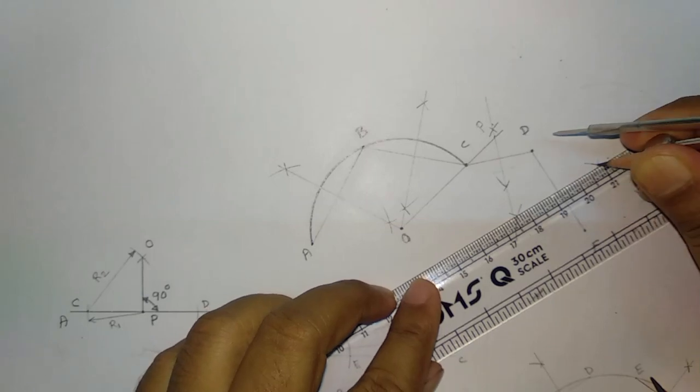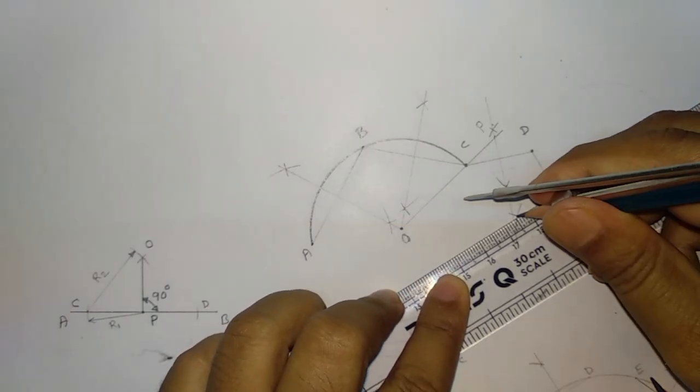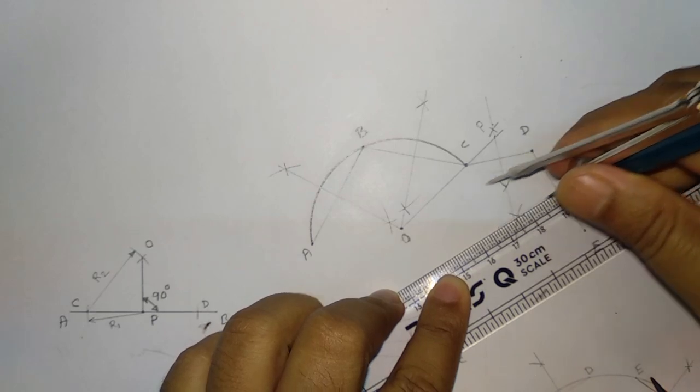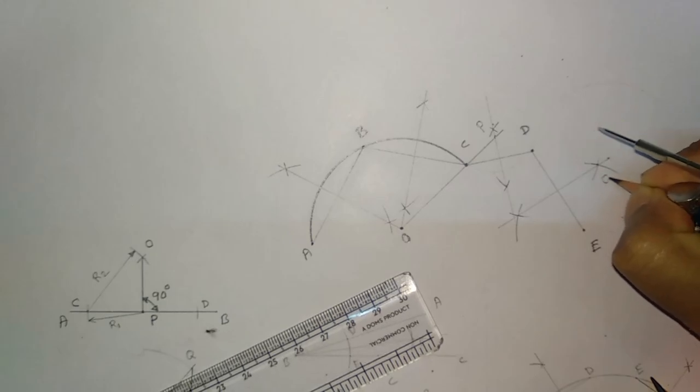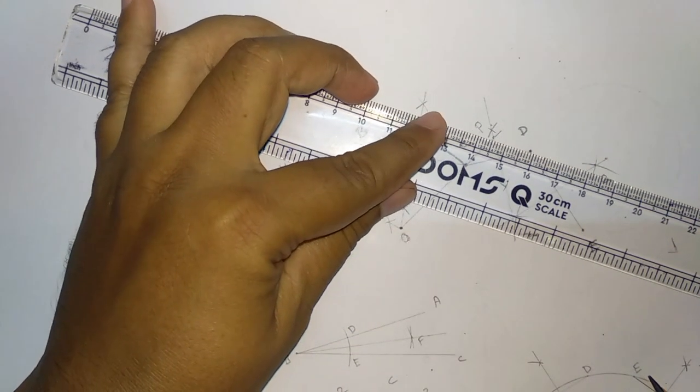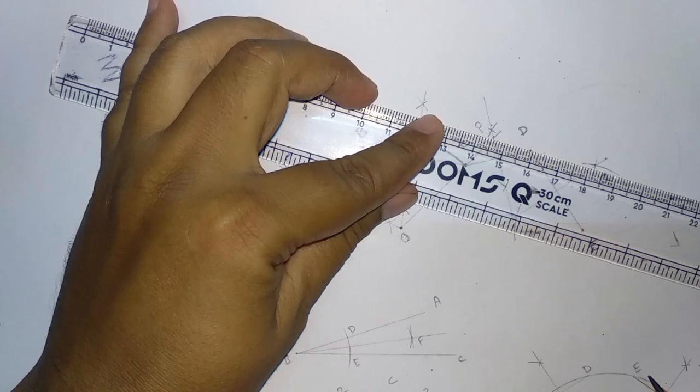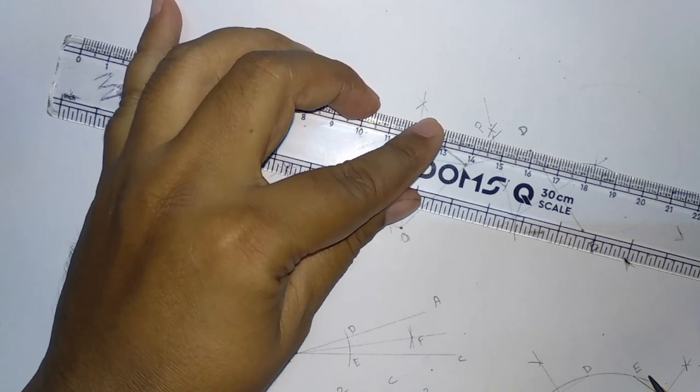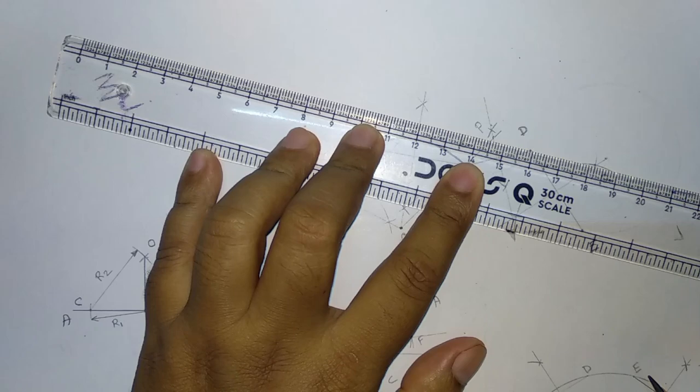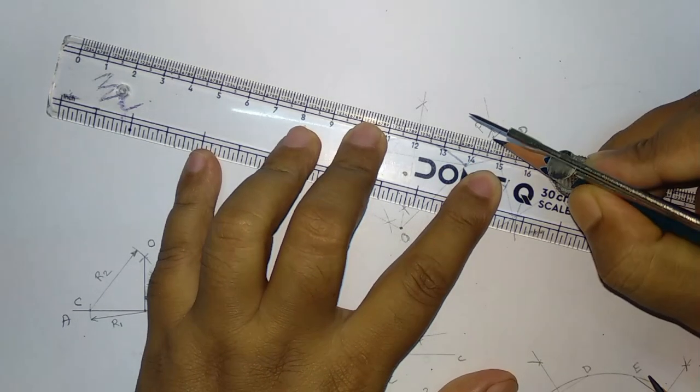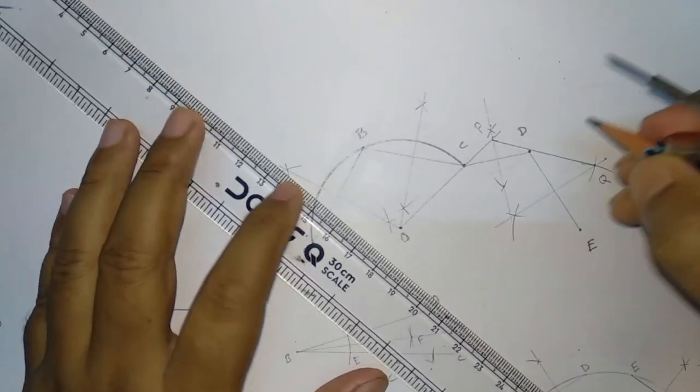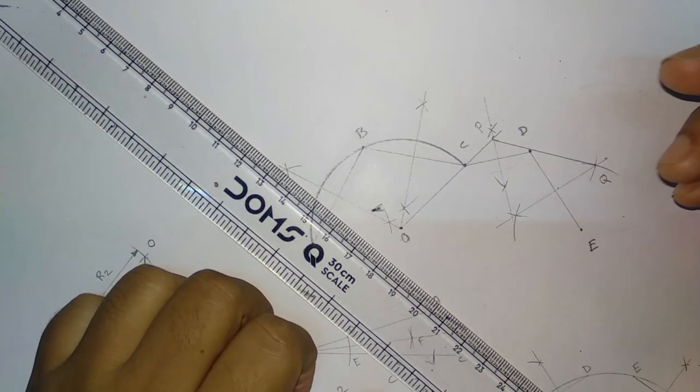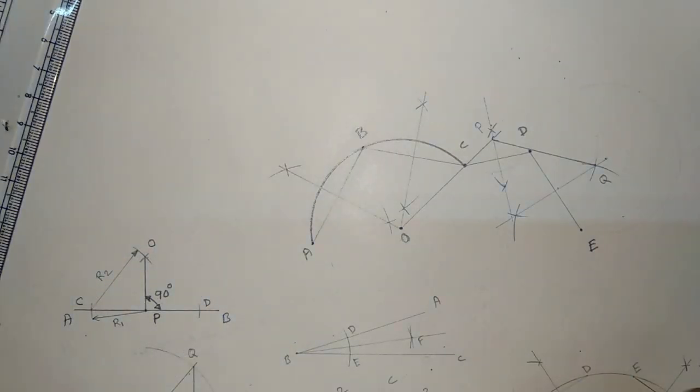Now you have to join this and this. So this is my point Q, this is my point Q. Now if you draw a line, it is going to intercept this point P also. So diagram should be accurate, otherwise it will not meet.